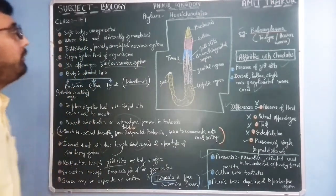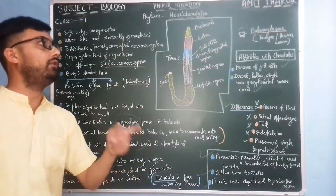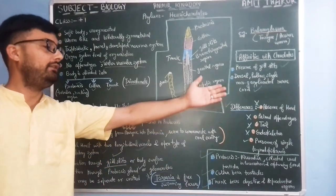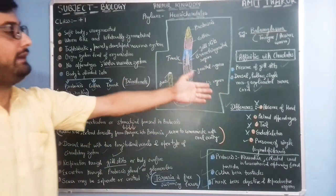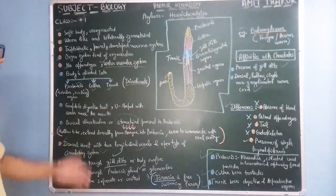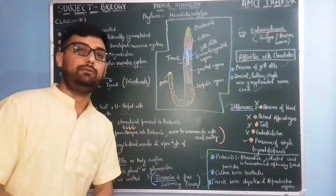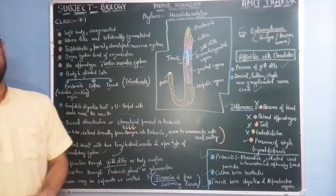So it's all about hemicordates, which is a connecting link between chordates and non-chordates. Here are some affinities and dissimilarities or differences between chordates and non-chordates, and these are the characteristic features. Tomorrow we will start with phylum chordata. Thank you.